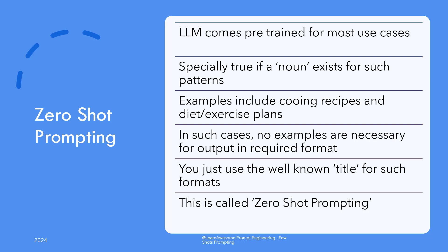Now, totally depending on the context of usage, the model, for most cases, is pre-trained on many examples, especially if a norm exists for such a pattern. An example of that can be a cooking recipe or a diet plan. If you ask one from the large language model, it will respond with the standard norm of a recipe — that is, ingredients followed by steps. For this example, you don't need to train it at all using examples. It is pre-trained. Ask for a great omelet recipe and you would get it structured as it should be, with zero examples needed. This is called zero-shot prompting.